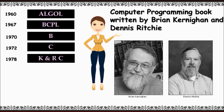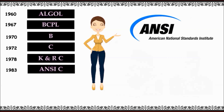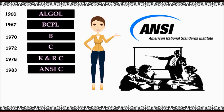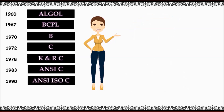In the year 1983, the American National Standards Institute appointed a technical committee to define a standard for C. The committee approved a version of C in December 1989, which is known as ANSI C.